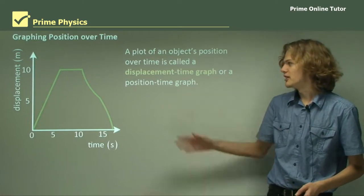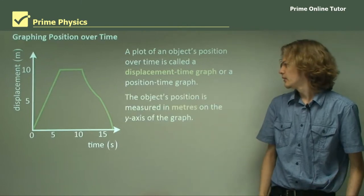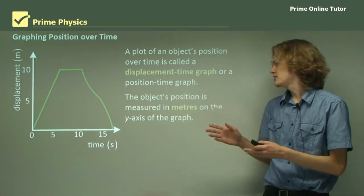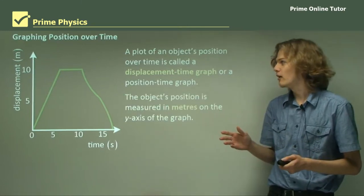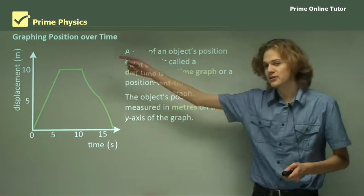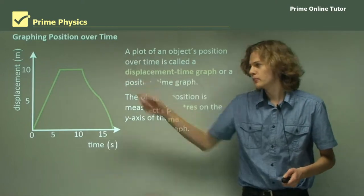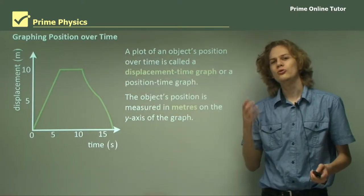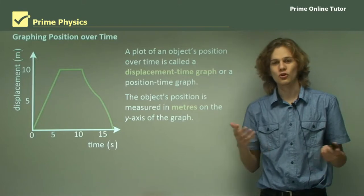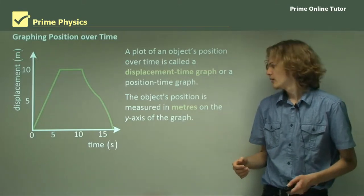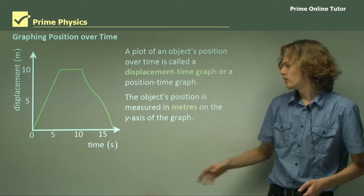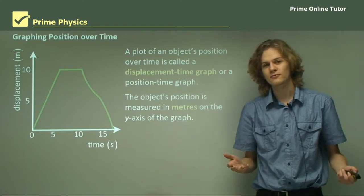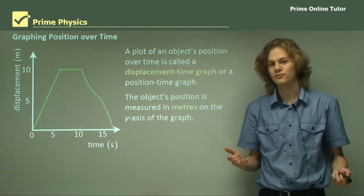So we can see one here. The object's position is measured in meters on the y-axis of the graph. Of course, because it's displacement, it's also important to include the direction if it's not immediately obvious. On the x-axis we have time, because that's the independent variable.